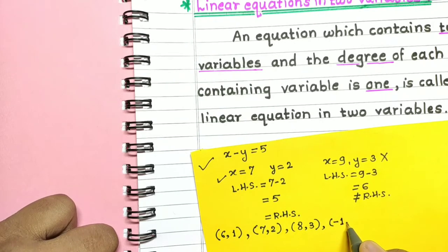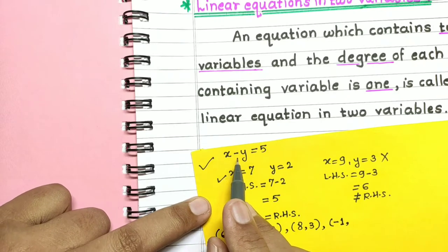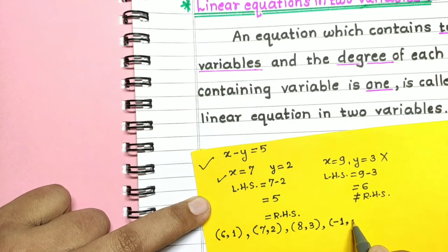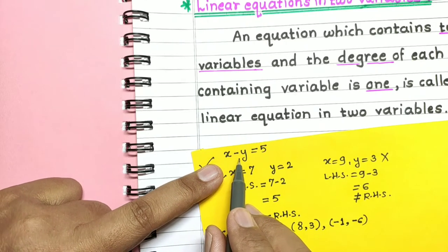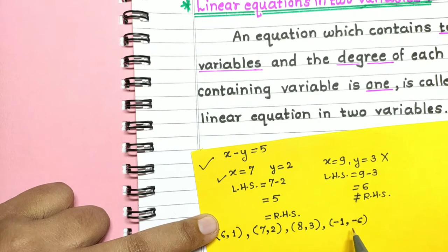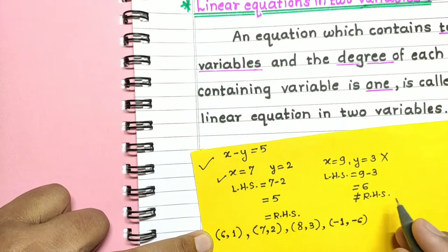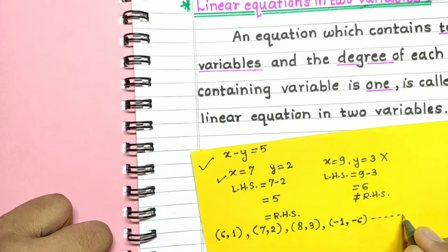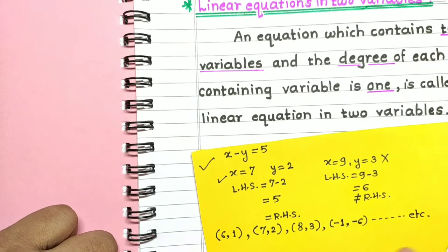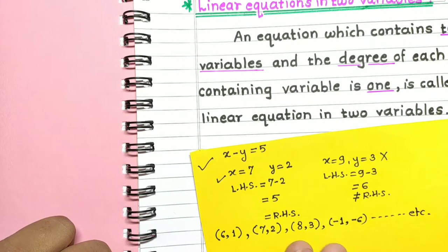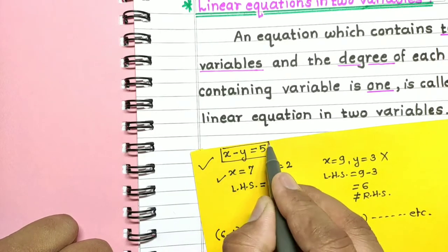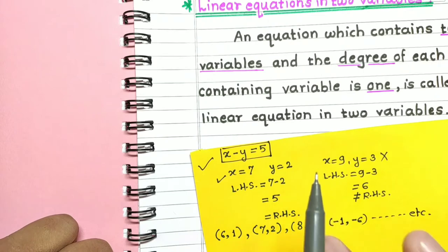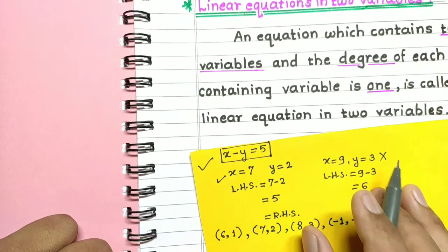If x is equal to minus 1, then y is minus 6 — since minus 1 minus minus 6 equals 5. So (−1, −6) is also a solution. We can find infinitely many such pairs as solutions of this equation. That means a linear equation in two variables has infinitely many solutions.